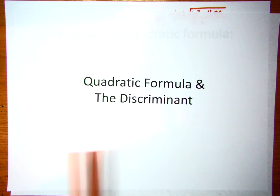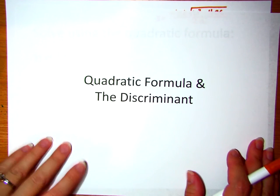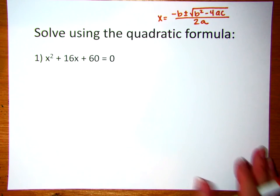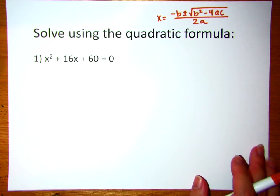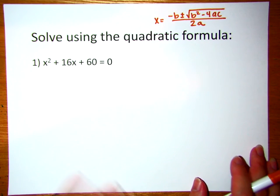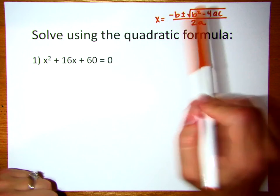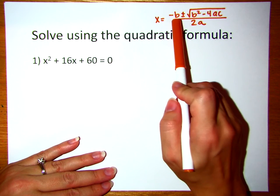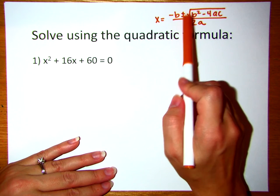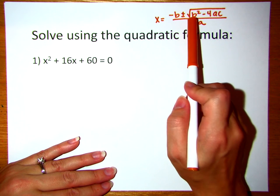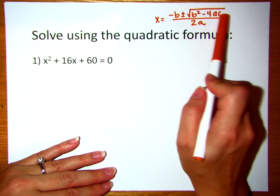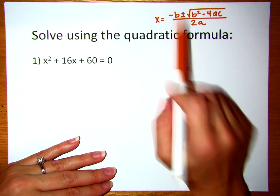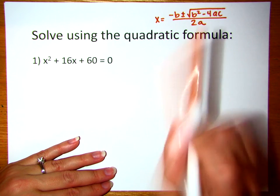This lesson is on the quadratic formula and the discriminant. I started by writing the quadratic formula up here at the top. x is going to equal negative b plus or minus the square root of our discriminant — that's this piece here in the middle — all of that over 2a.